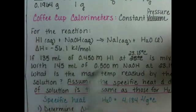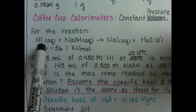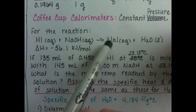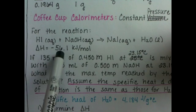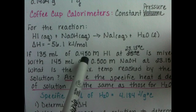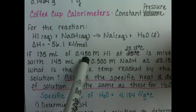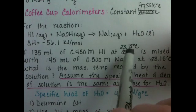And in this particular example that we're going to do, we're doing an acid-base neutralization, hydroiodic acid with sodium hydroxide to make sodium iodide and water, and we have a ΔH for that exothermic reaction. We have 135 mL of 0.450 M hydroiodic acid at 23.15°C.